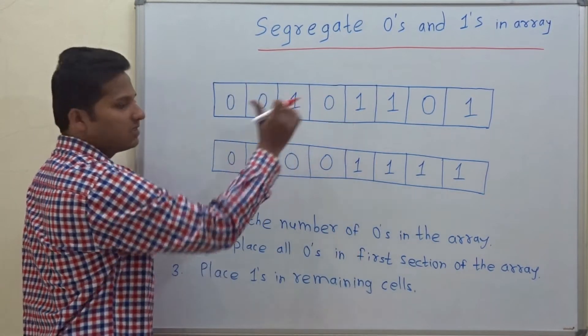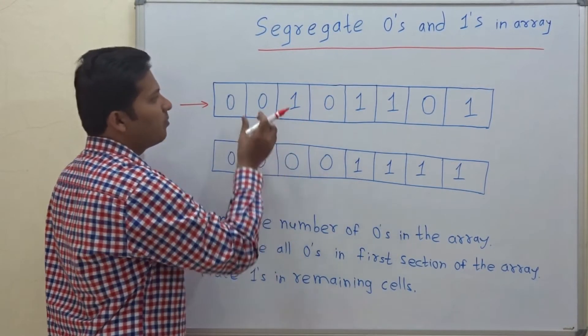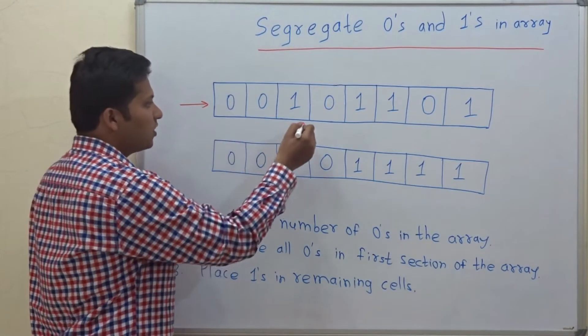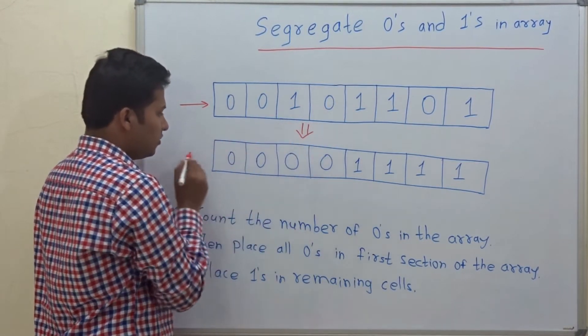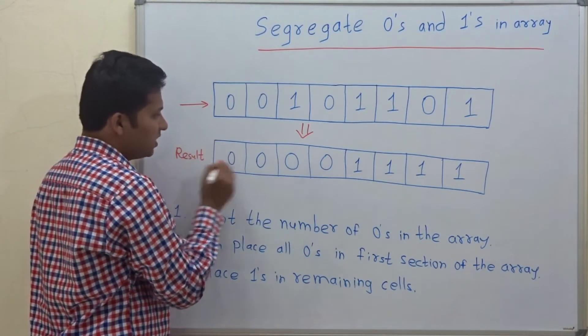So this is the array and in this array zeros and ones are placed at different positions. So now you have to convert this array into this resulting array. So this should be the result.